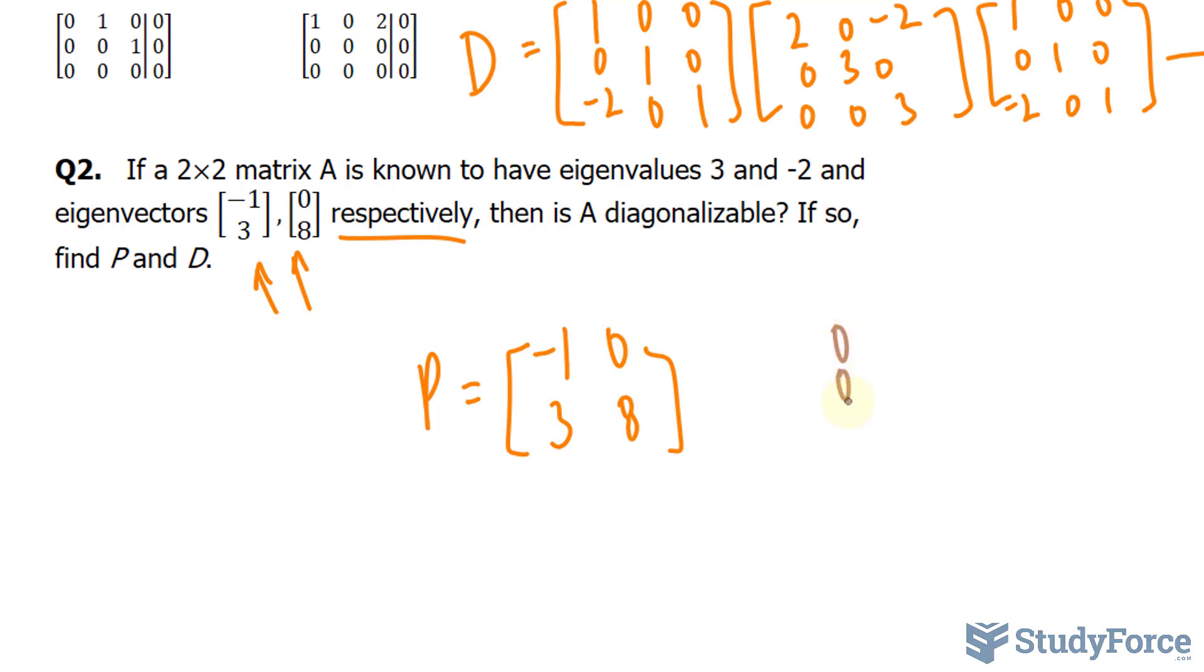And it's in respective order. So if the eigenvalues was 3 and negative 2, then our P will be negative 1, 3, that's the first column, and the second column will be 0 and 8. You could have done it in the reverse order, but then your diagonal D would be 3 and negative 2 in this case, or negative 2 and 3 in the other case.